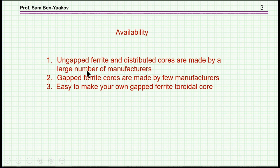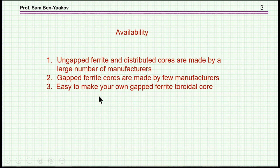What is the availability of these toroids? Un-gapped ferrites and distributed gap cores are made by many many companies. Gapped ferrite cores are made by only a few manufacturers — the selection is very small. But the good news is it's really easy to make your own gapped ferrite toroid, because soft ferrites are easy to machine. If you get an un-gapped ferrite toroid you can just saw it to get the air gap you'd like.